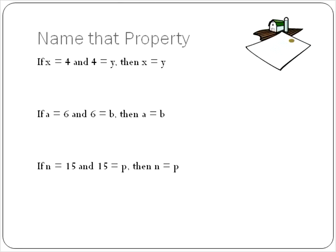And the final property that we're going to look at is if x equals 4 and 4 is equal to y, then x is equal to y. You see that? If a equals 6 and 6 equals b, then a is the same exact thing as b. They're both equal to 6.